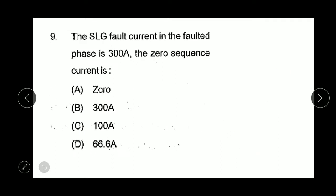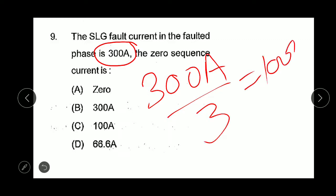Question number nine: The SLG single line to ground fault current in the faulted phase is given as 300 ampere. The zero sequence current will be simply 300 ampere by 3, which equals 100 ampere. Option C.